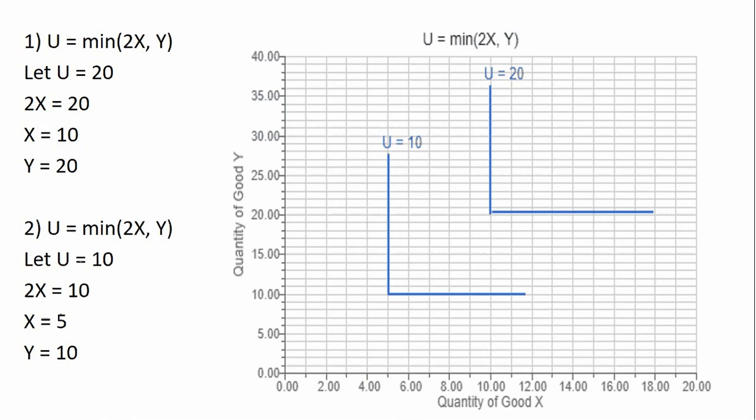So setting 2x equal to 10, dividing through by 2, x equals 5, and then setting what's over here equal to 10, y equals 10, and we're going to graph that point. So here's where x equals 5, and here is where y equals 10.